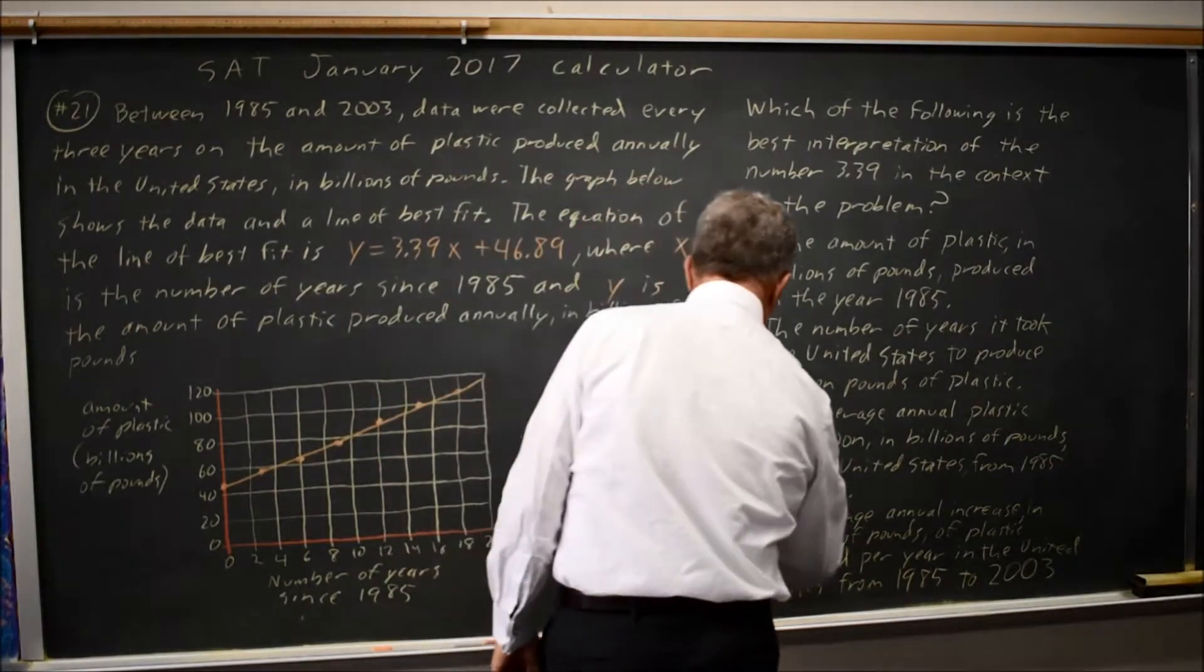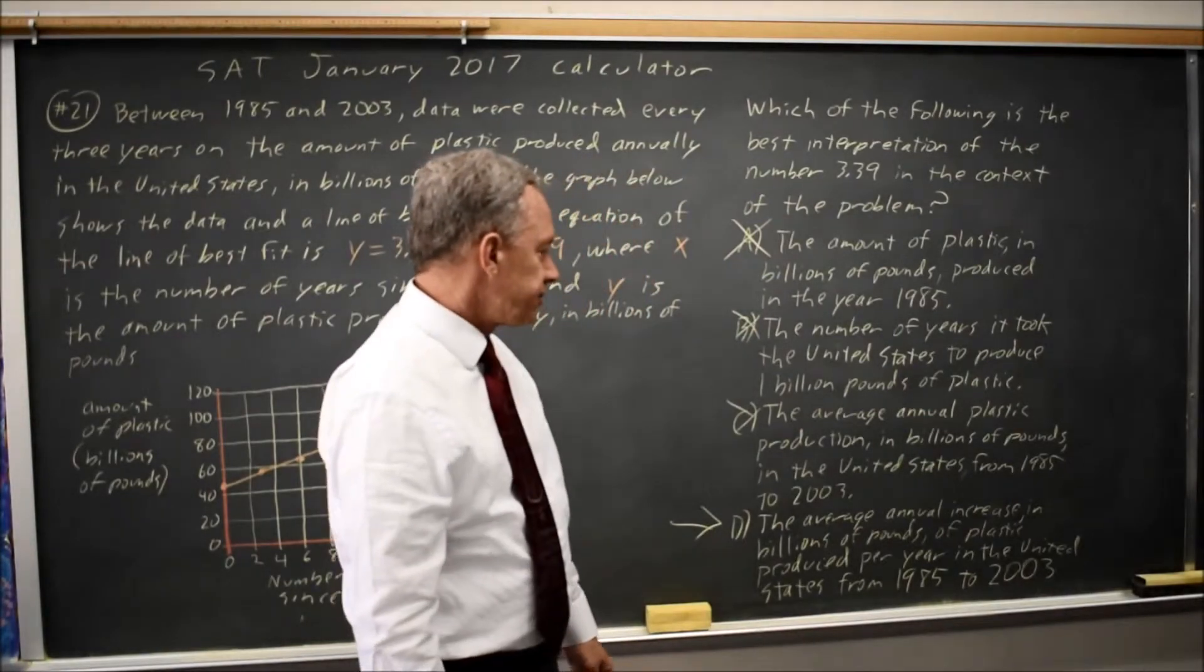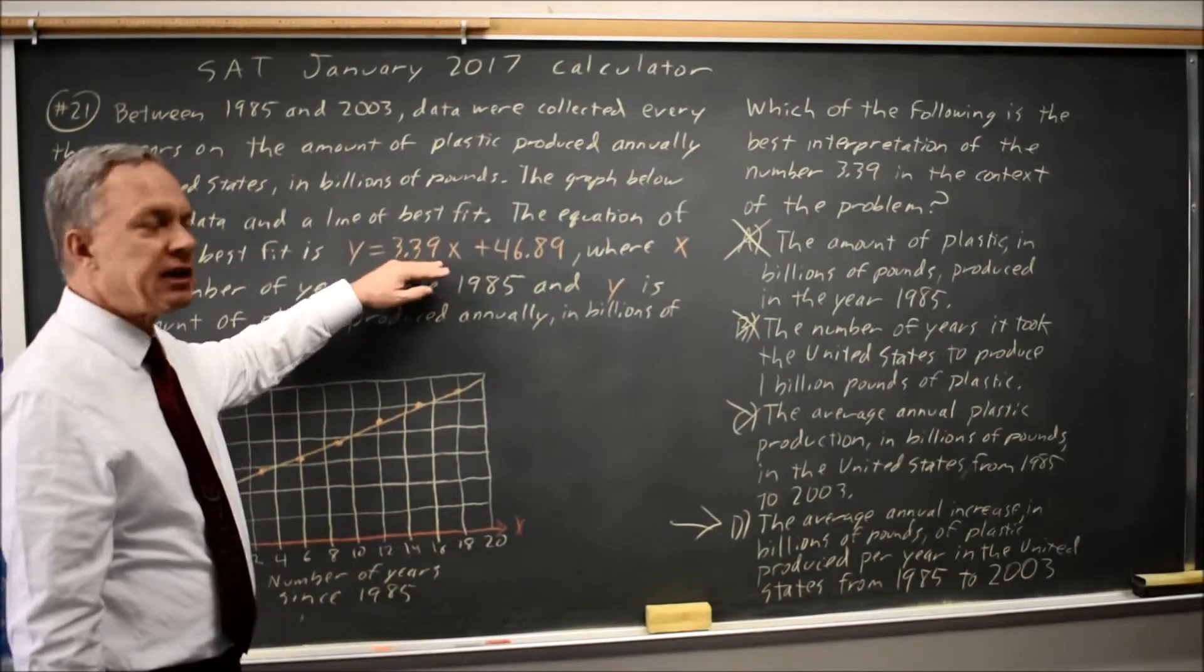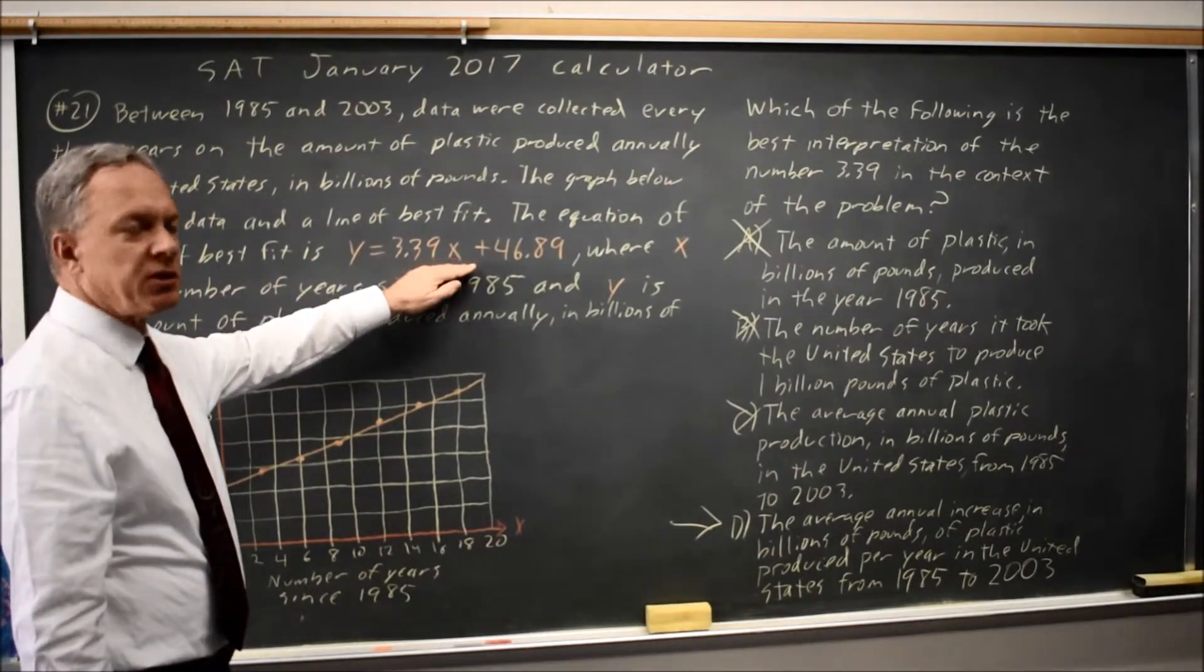It has to be choice D, because we've ruled everything out. Now, 3.39, if you remember, is the slope, which is how much Y goes up when X goes up by one.